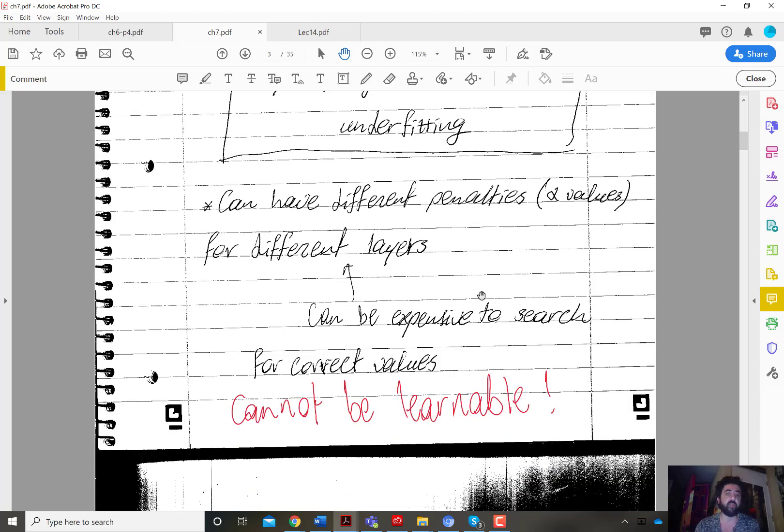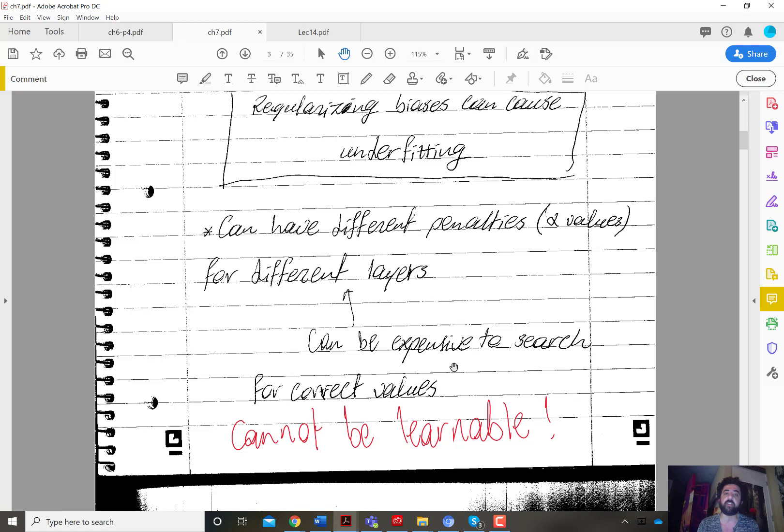So this is difficult because we cannot make it learnable. So learning the right value for alpha can be difficult, can be tricky. Because there has to be a lot of trial and error and testing with some kind of validation set.